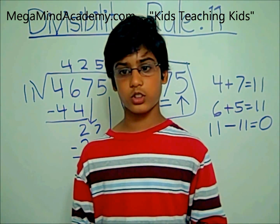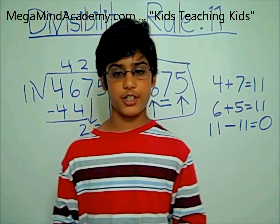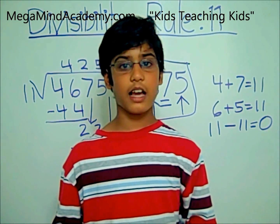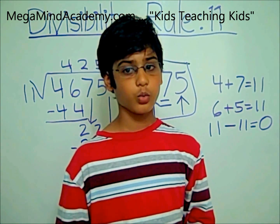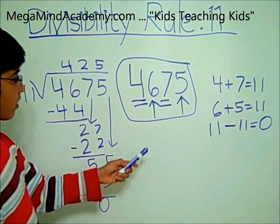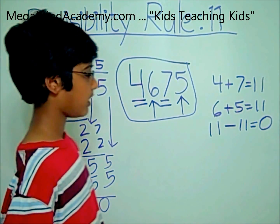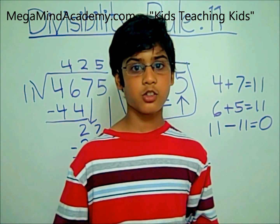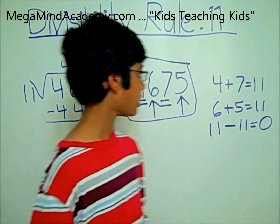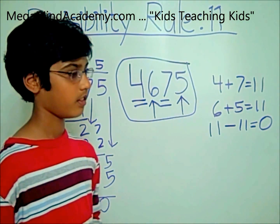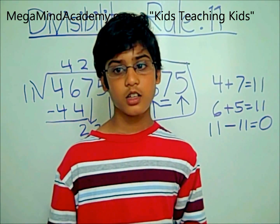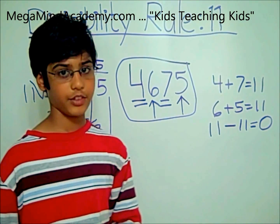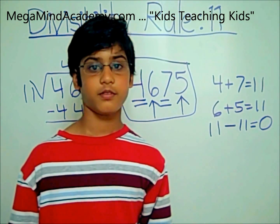Today we learned about divisibility rules — the rule of 11. The rule of 11 is that you add up the alternate digits and subtract the total of the alternate digits from the total of the other alternate digits. The difference has to be divisible by 11, like 0 was divisible by 11. Thank you for watching this video.